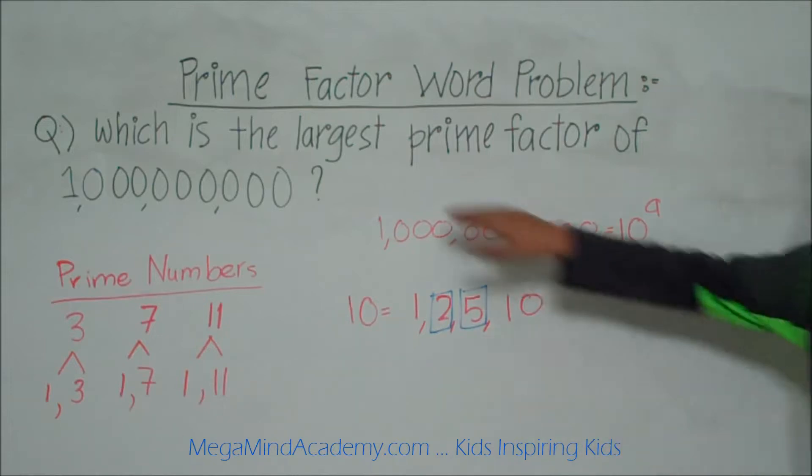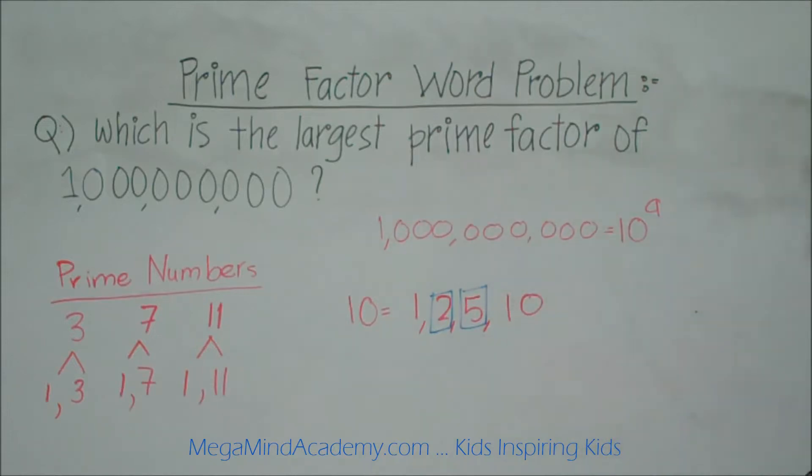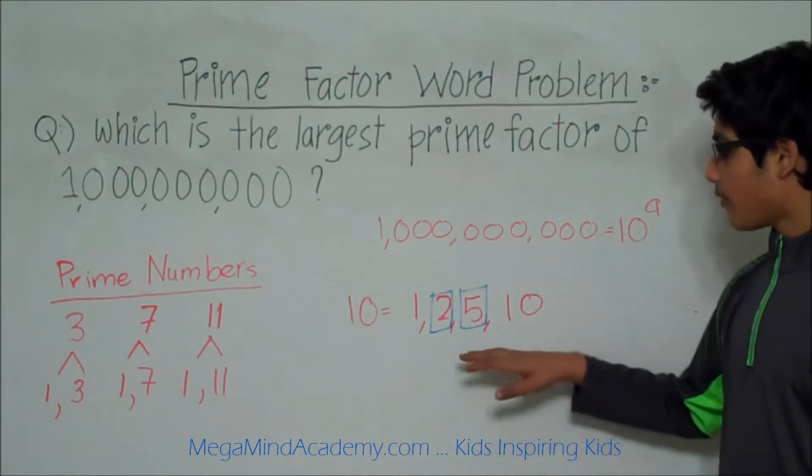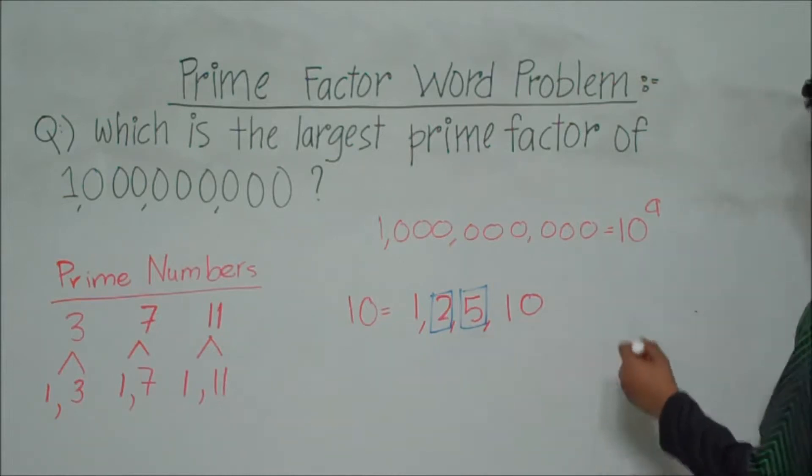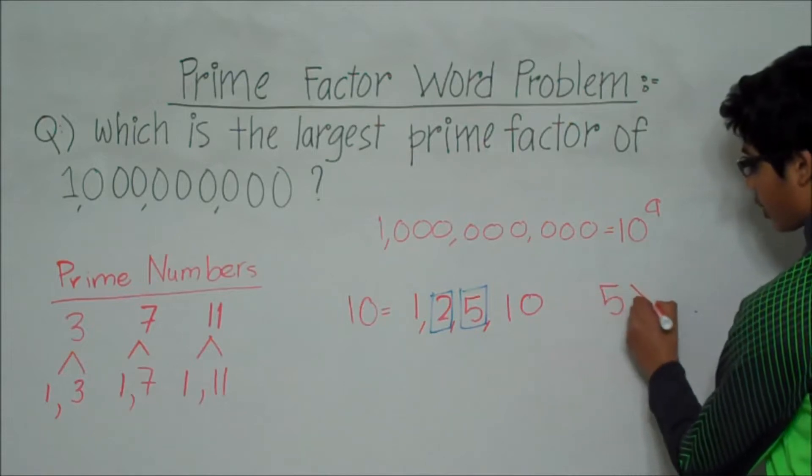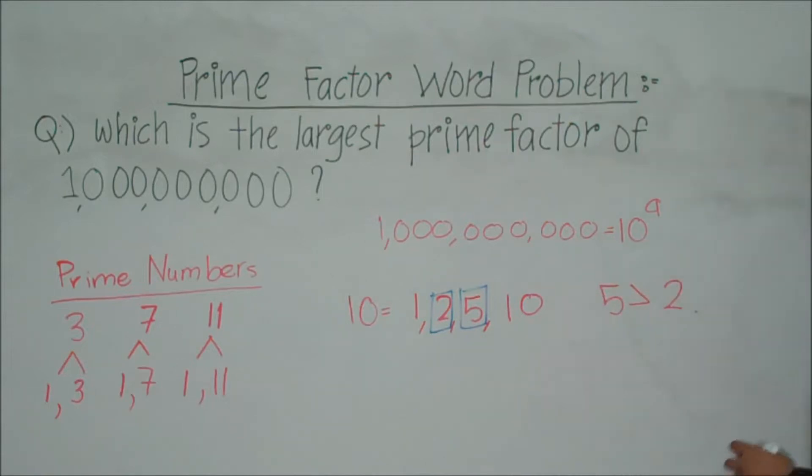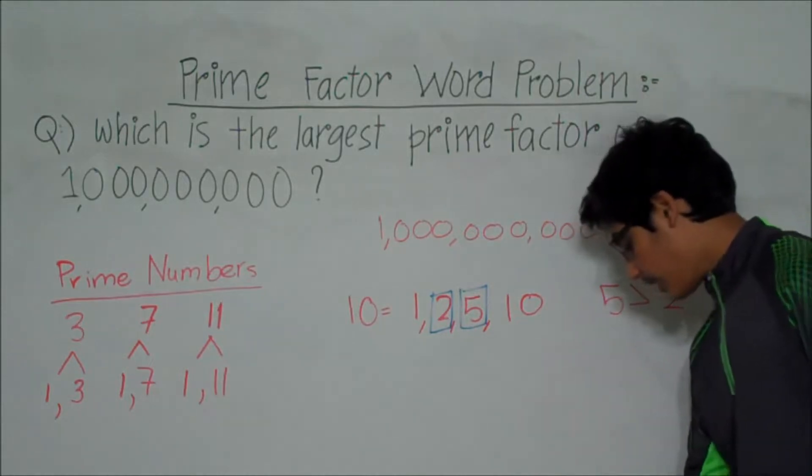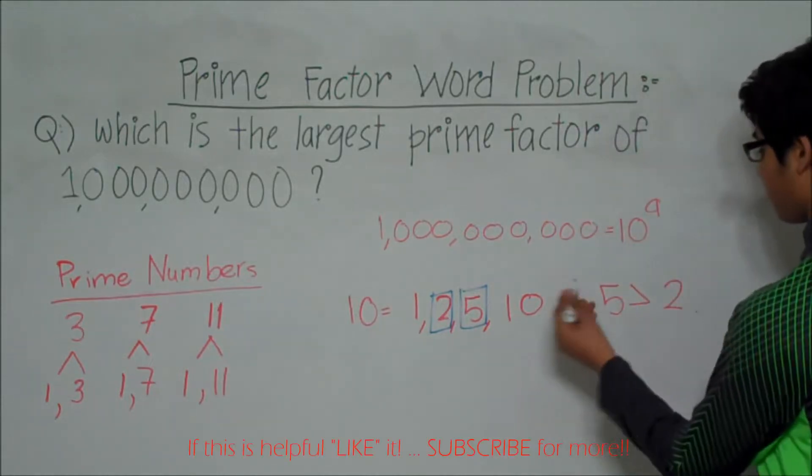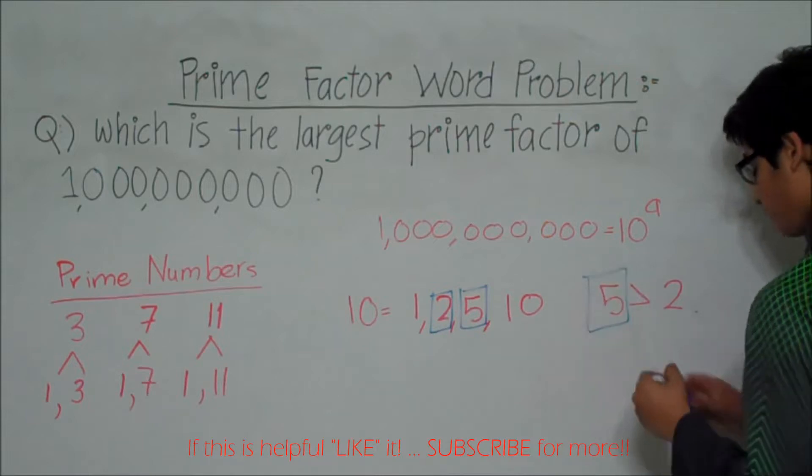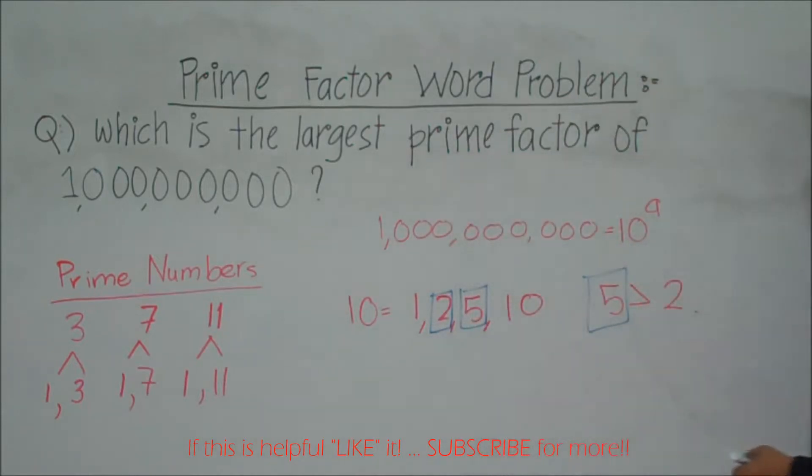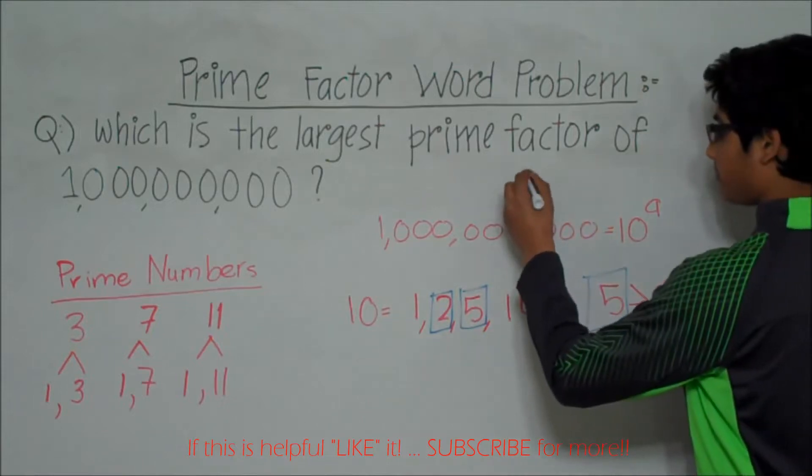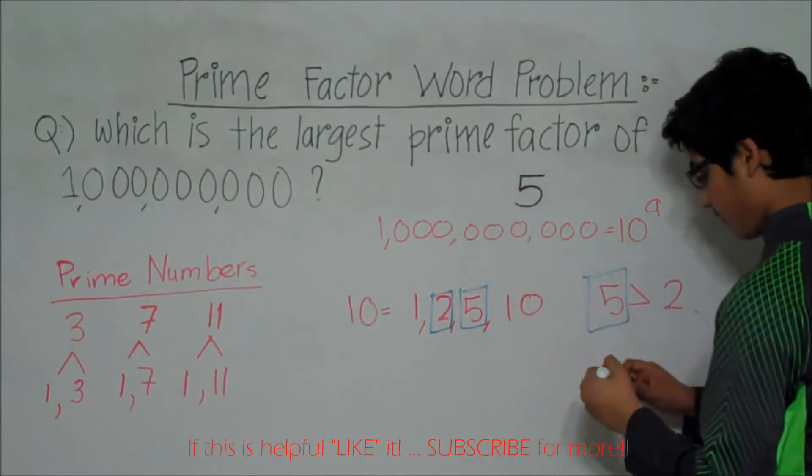We need to find the largest prime factor of 1 billion. We can see from this example that 5 is larger than 2, or greater than 2. So the answer to this problem is 5. The largest prime factor of 1 billion is 5.